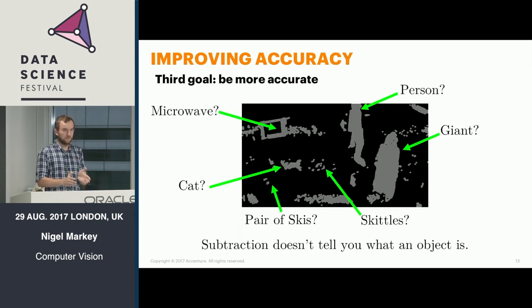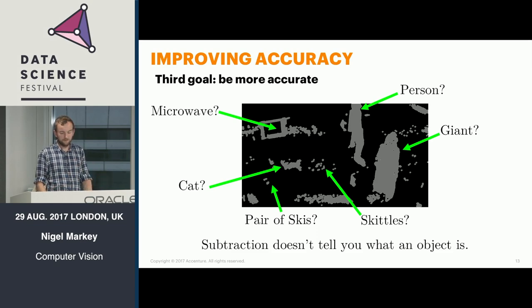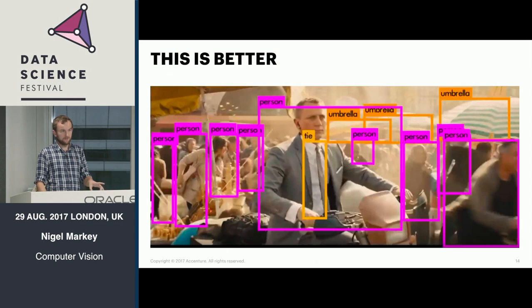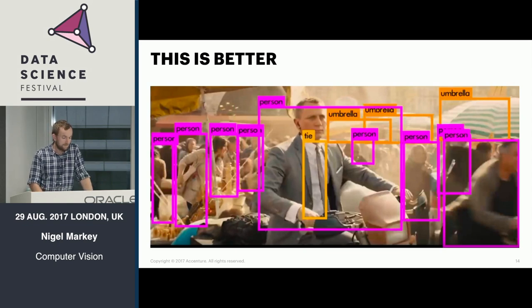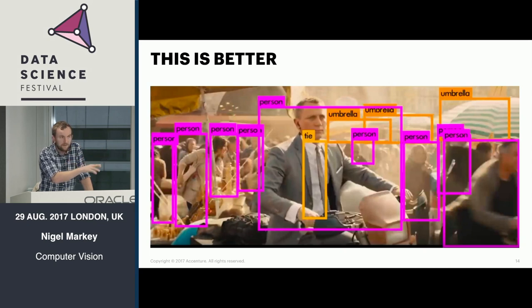The problem is it doesn't tell you anything about the type of thing it's seeing. You don't know whether a large blob is a person, a shadow, or a car. What you really want is something where each individual thing is recognized, localized on the image, and labeled with the class it thinks it is — recognizing ties, umbrellas, people, even in situations where there's occlusion, like a shoulder obscuring most of a person's body. There's no way to get to this with background subtraction.